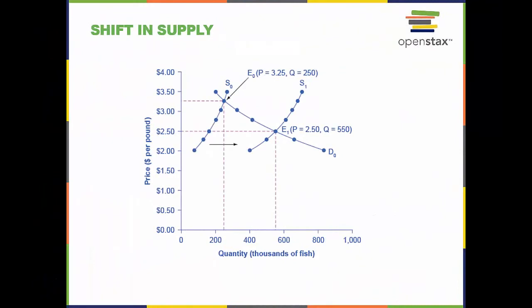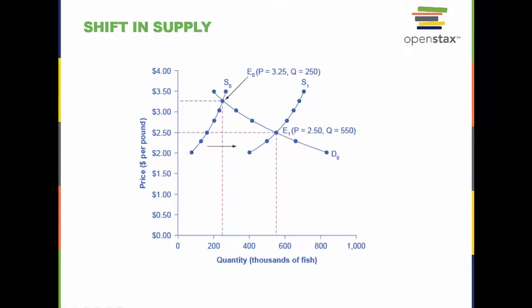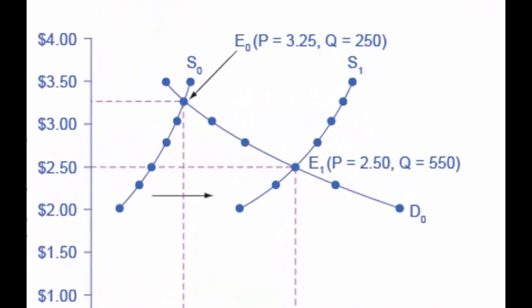Let's take a look at a shift in the supply of tuna caused by the factor of weather. In this case, the weather was good, so it is easier to catch more tuna and the cost of production goes down, with the desired profit remaining the same. The overall price decreases for every quantity supplied of tuna. Let's go through the four steps to determine the change in equilibrium price and quantity of tuna. First, we determine the original demand and supply curves — S0 and D0 — which gives us the original equilibrium E0.